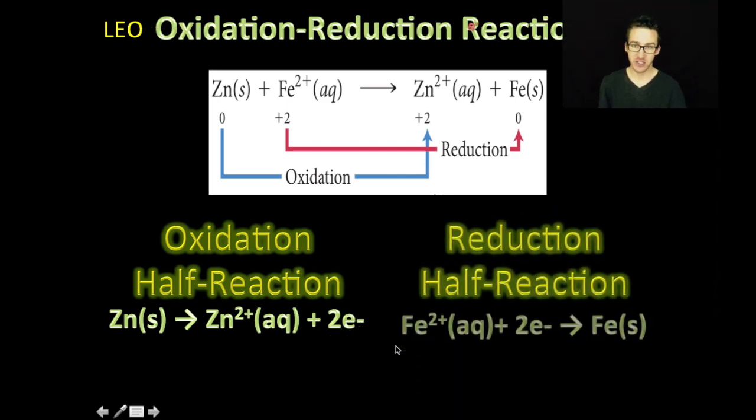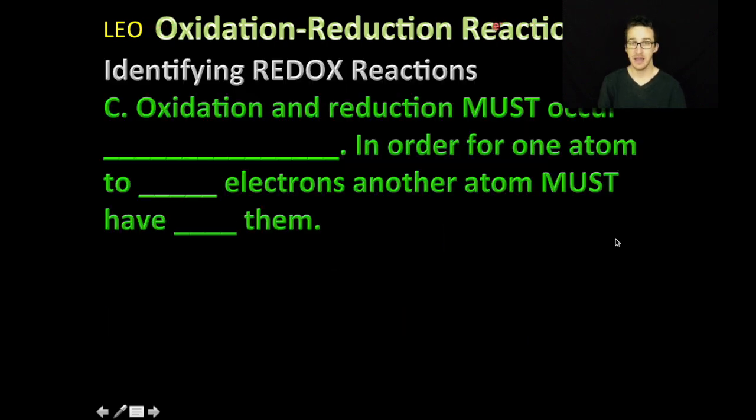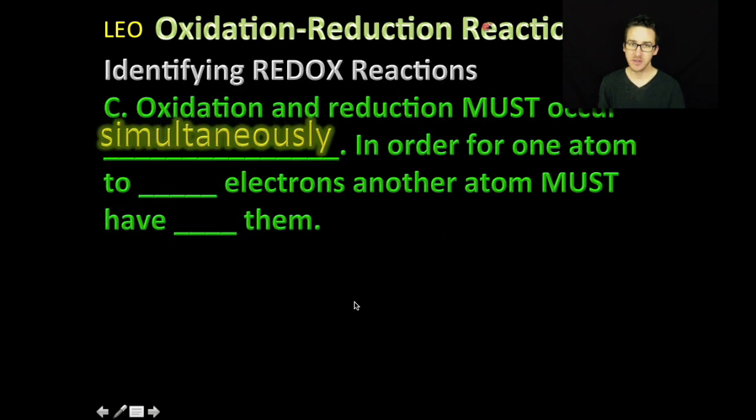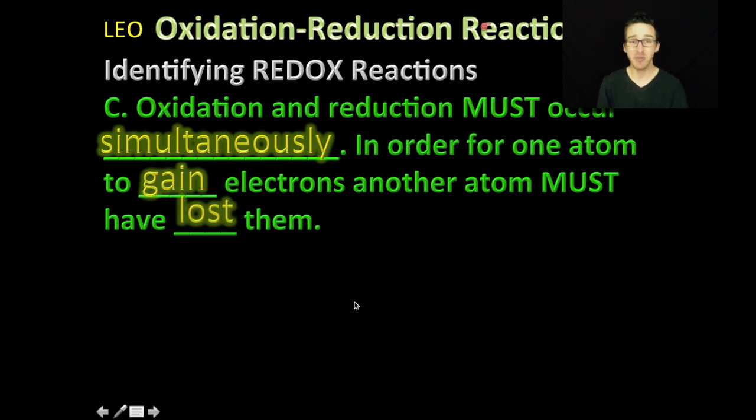So you will see zinc forming the zinc ion and two electrons that it lost. The reduction half reaction, on the other hand, is going to show the iron ion gaining two electrons to form solid iron. Notice with the half reactions that you will see in the oxidation half reaction, the electrons on the product side. With the reduction half reaction, you will see those electrons on the reactant side. And then lastly, keep in mind that these two things have to happen simultaneously at the same time. In order for one atom to gain electrons, something else must have lost them.